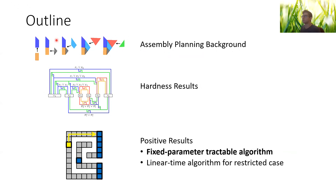Just to let you see a negative instance — this would be an instance where we cannot find such a set. The rest of the talk will give the background from assembly planning that gave rise to this question, briefly discuss hardness results — the problem is actually NP-hard — and then focus on the positive results, which is a fixed-parameter-tractable algorithm, and also briefly mention a restricted case for which we have a linear-time algorithm.